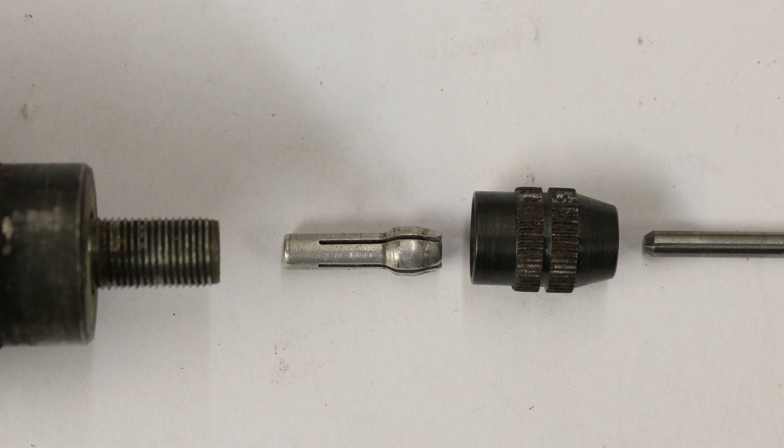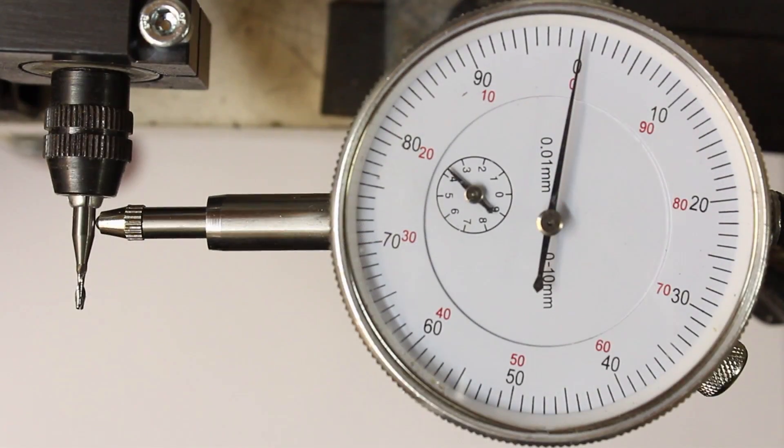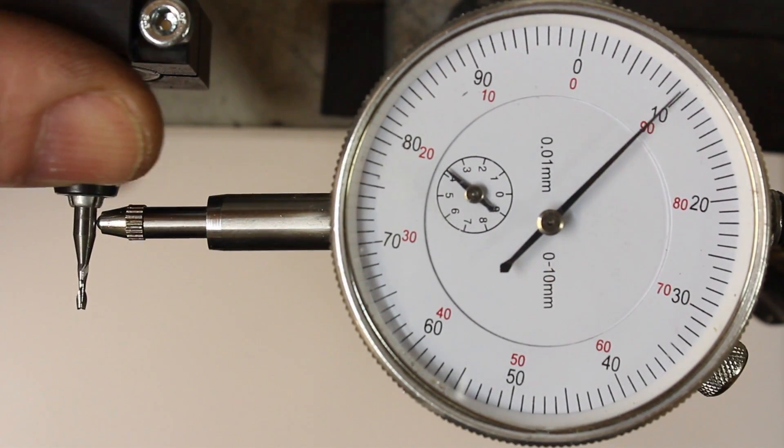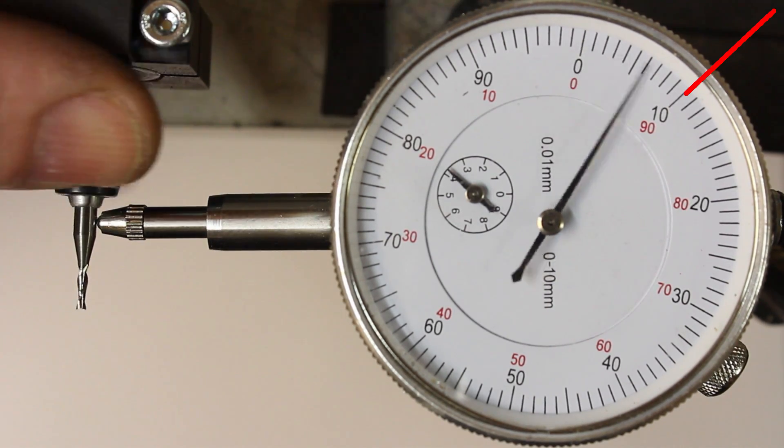The second way of mounting a milling cutter is using an aluminum collet. With that, the inaccuracy is just 100 micrometers.